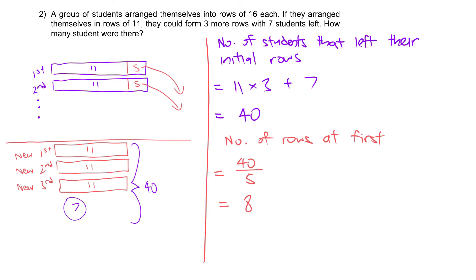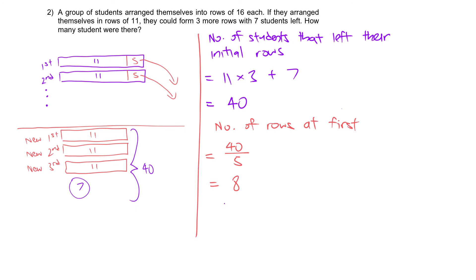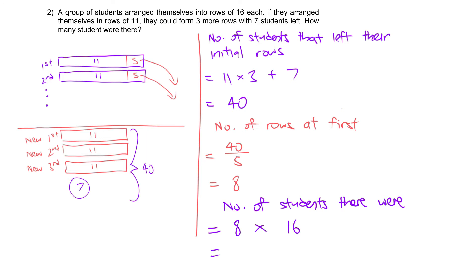Hence, from there we can calculate the answer. Number of students there were: initially, 1 row has 16 students, so 8 rows means 8 times 16 — that gives you 128 students.